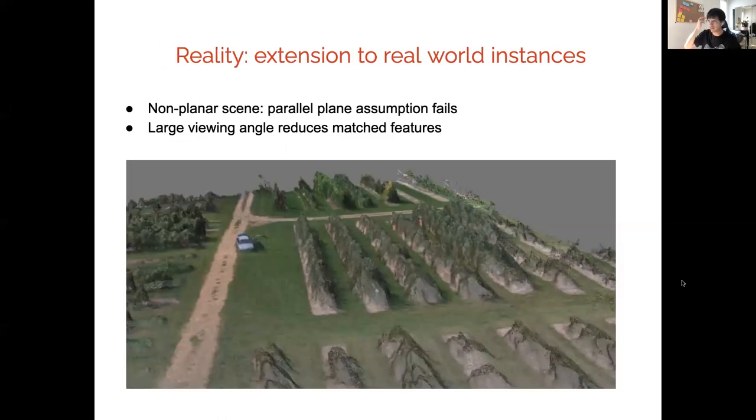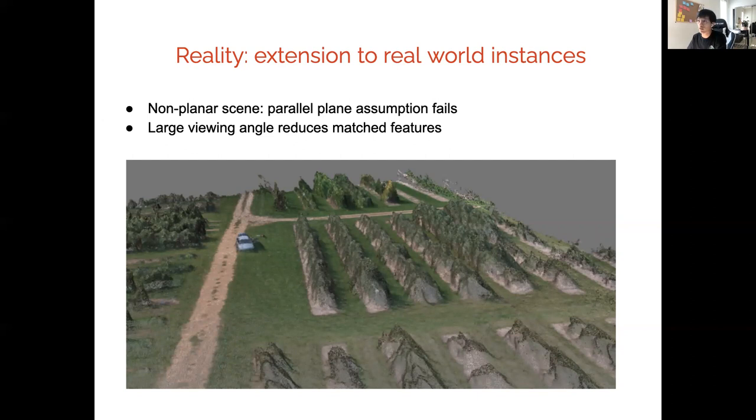However, in reality, there are non-planar scenes such as in this orchard where we have trees going up and down. Large viewing angles such as 90 degrees will reduce the matched correctness of the features.